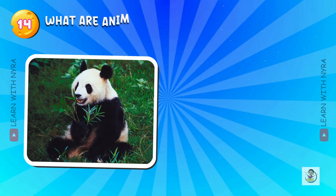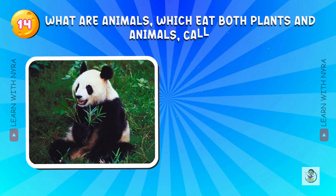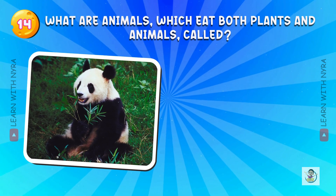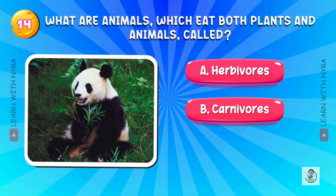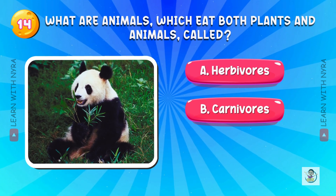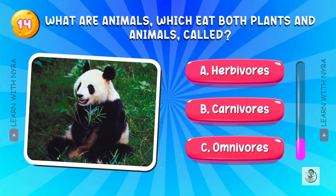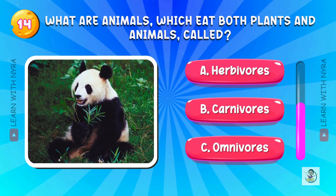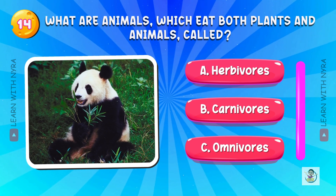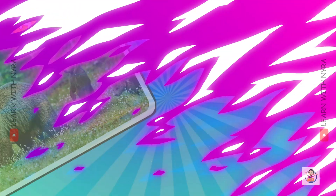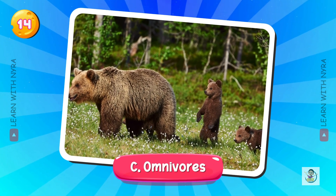What are animals which eat both plants and animals called? A. Herbivores, B. Carnivores, C. Omnivores. And the answer is C. Omnivores.